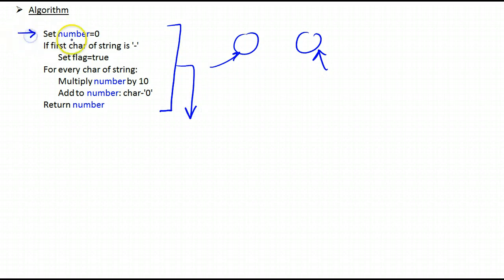The first thing I do is that I set a variable called number to zero and this will in fact hold the result that we're going to be passing back or returning from our function.